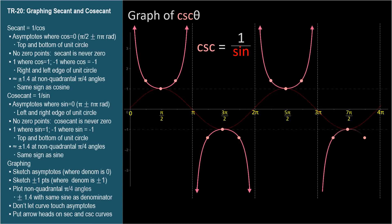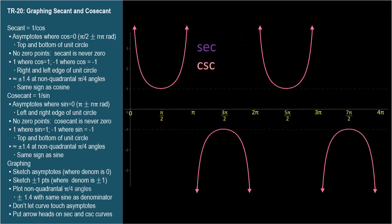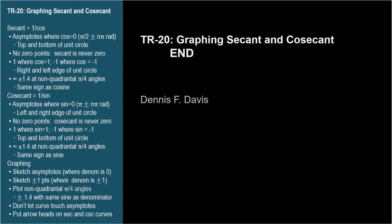You should be able to graph all six trig functions. Start with a neat coordinate axis. Sketch the asymptotes, except for sine and cosine since they don't have asymptotes. Plot some key points and make your sketch. In the next video, TR-21, I'll cover the domain and range of the trig functions.